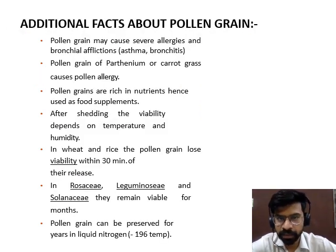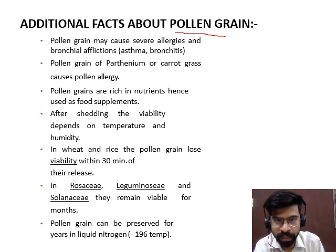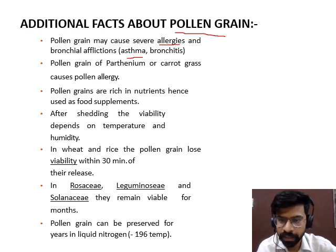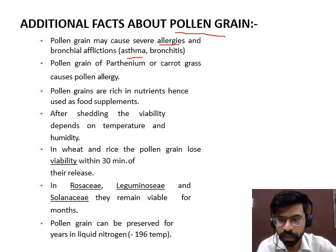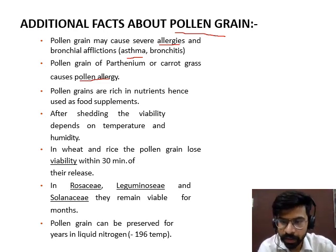These are some additional facts about pollen grain. Pollen grain may lead to several health diseases — it causes allergy or asthma. When pollen grain enters the respiratory tract of a human being, it can sometimes lead to sneezing or a running nose, so several allergic reactions can be observed in a person with pollen allergy. Pollen grain of parthenium, or carrot grass, causes pollen allergy.